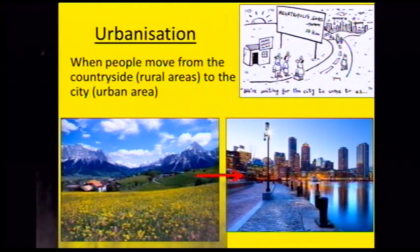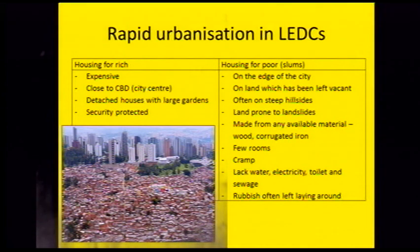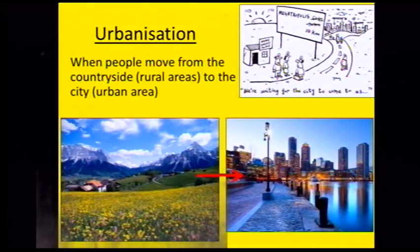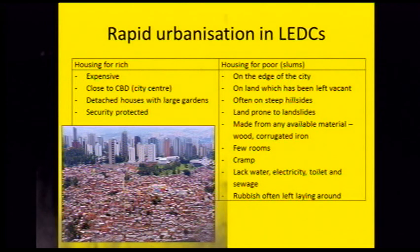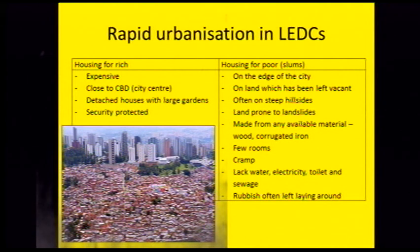Urbanisation is when people move from the countryside to the urban area — rural to urban, countryside to city. Generally in MEDCs, we can keep up with the influx of people, but in LEDCs they have real problems because they don't have the money to build the infrastructure. People end up living on the edge of cities in the periphery, on marginal sites with steep hillsides that suffer from landslides, using scrap materials, living in very cramped conditions with lots of crime and very little access to safe clean water, electricity or sewage.